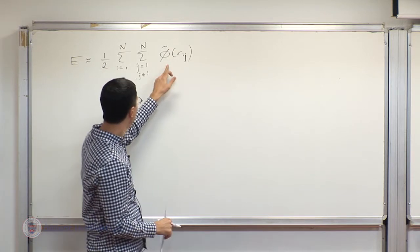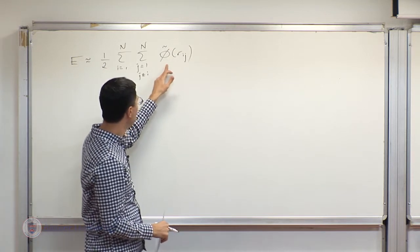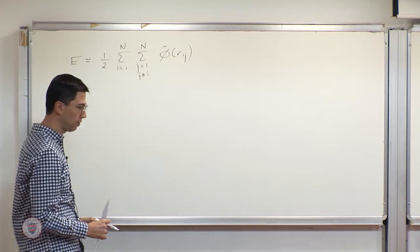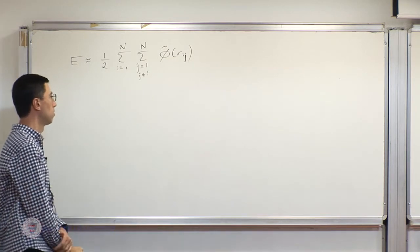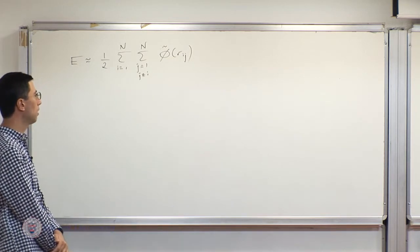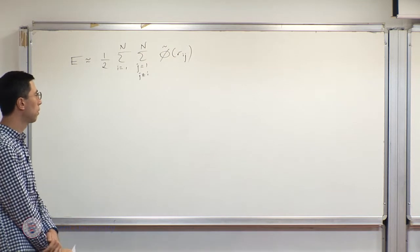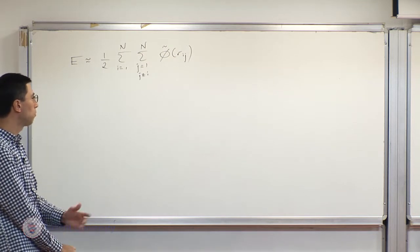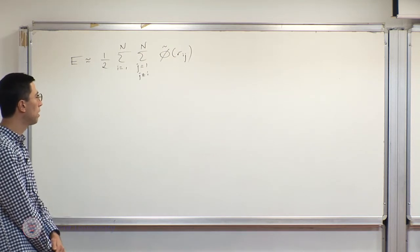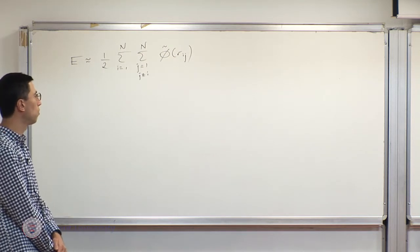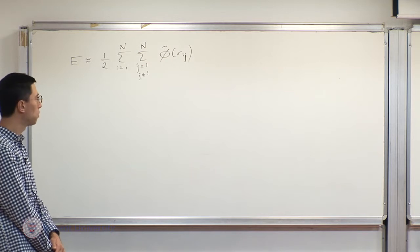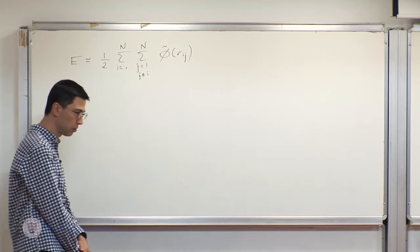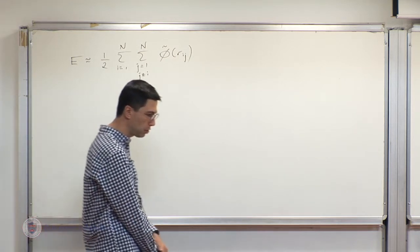This pair potential can eventually be chosen as something expected to give meaningful results, but we chose at the beginning as one example something very simple: a classical Lennard-Jones potential.